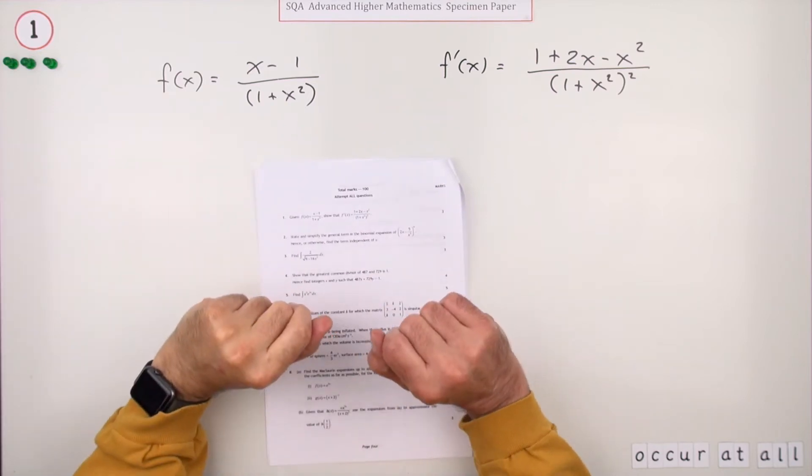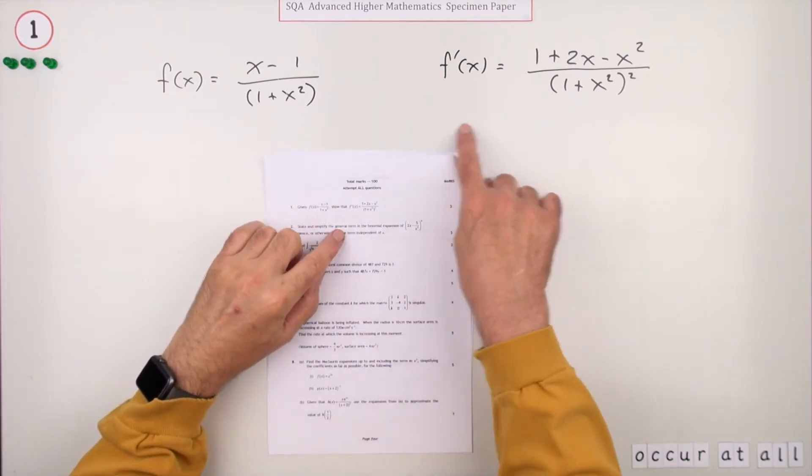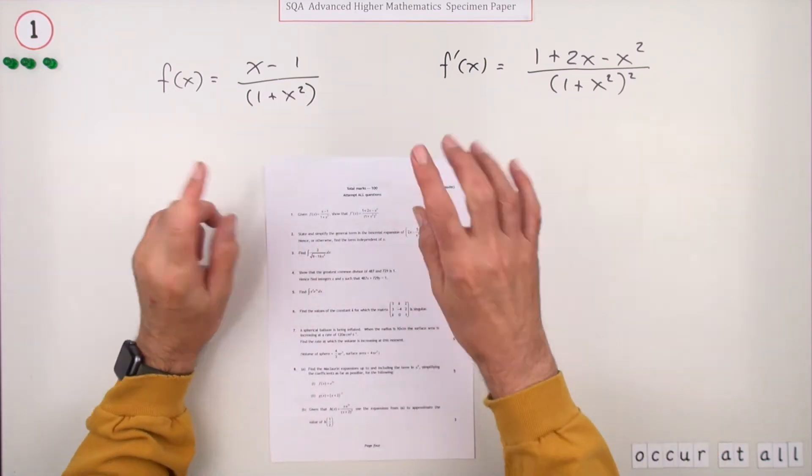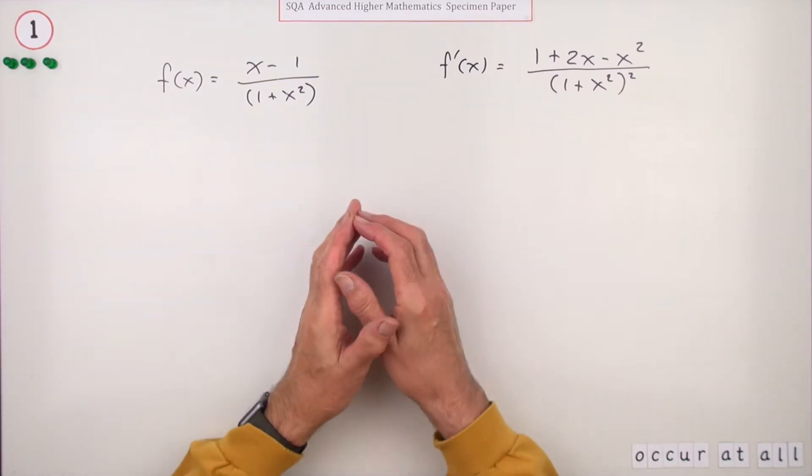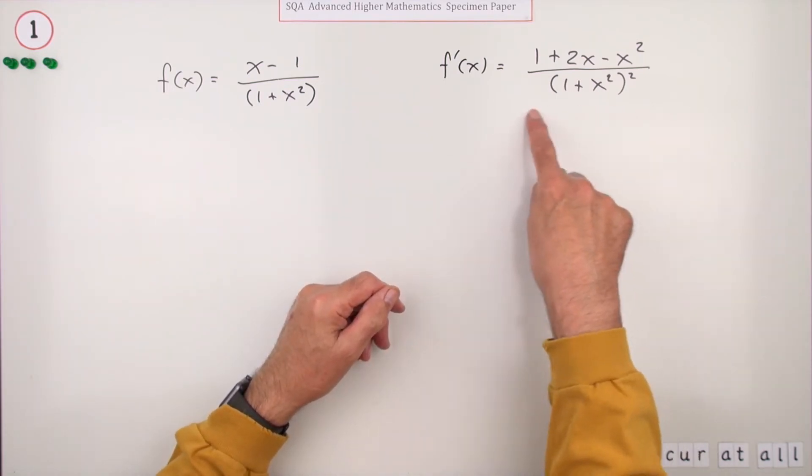So number one then for the three marks here, just a little differentiation but strange in that in this case, like you've seen the exams, it says show this result for something as straightforward as this. With the three marks, the first mark is obviously going to be knowing to use the quotient rule that's indicated here.